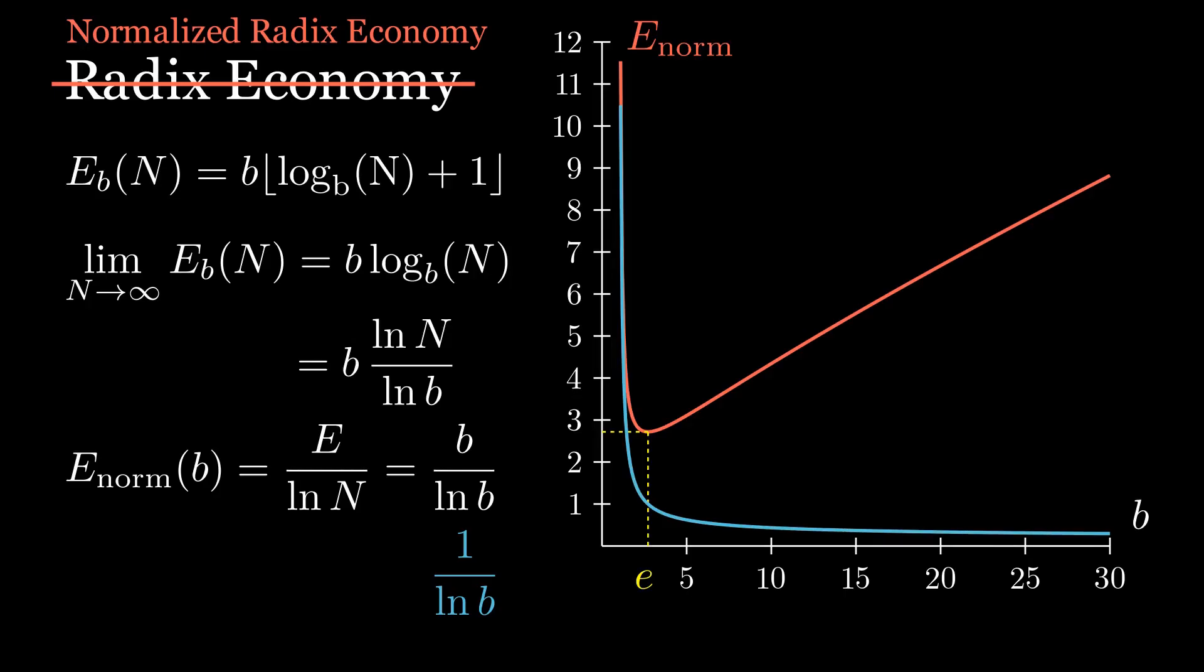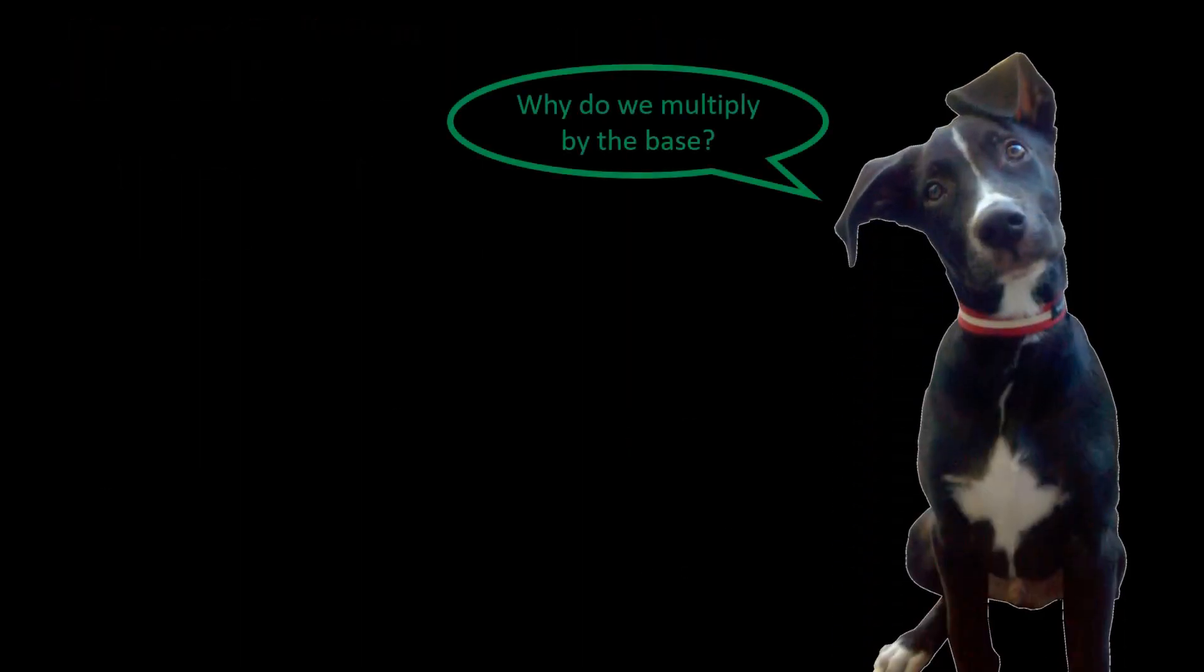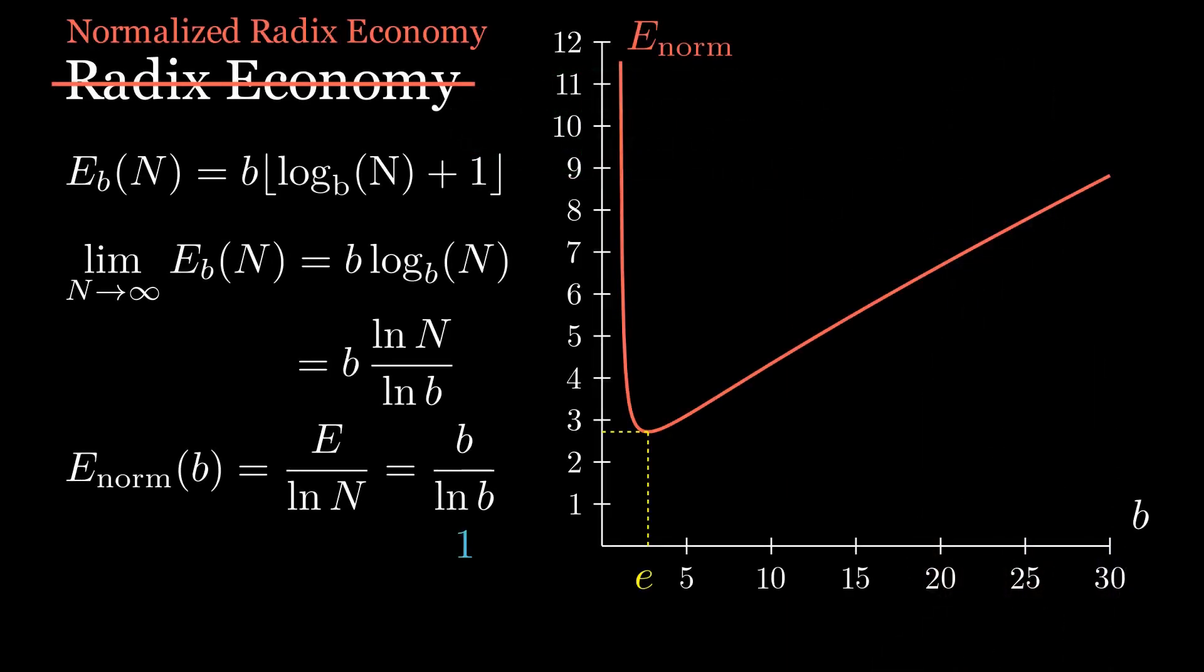Again, the formula involves multiplying by the base. And that was the question I had going into this video. Why do we multiply by the base? It seems to me that the most efficient base is one that writes numbers with the fewest digits.